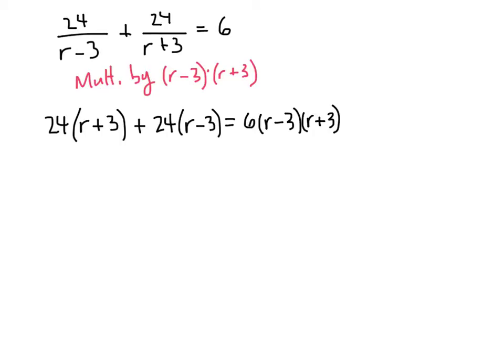So we've gotten rid of our ugly fractions, but now we've got some more algebra to do to simplify this. So let's start multiplying things out. On the left-hand side, when we distribute the 24, we get 24r plus 24 times 3 is 72. Distribute the other 24, 24 times r minus 24 times 3 is 72. We might recognize r minus 3 times r plus 3 as a difference of two squares. And so that's going to be r squared minus 9.